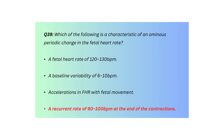Q39. Which of the following is a characteristic of an ominous periodic change in the fetal heart rate? A fetal heart rate of 120-130 BPM, a baseline variability of 6-10 BPM, accelerations in FHR with fetal movement, or a recurrent rate of 90-100 BPM at the end of the contractions.